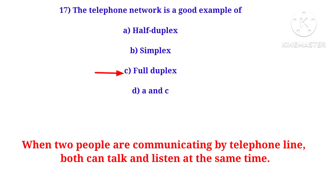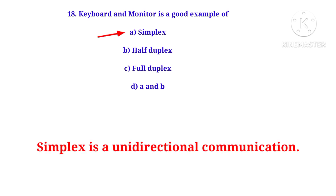The correct answer for the telephone network question is full duplex — when two people communicate via telephone or mobile, it is full duplex. Keyboard and monitor is a good example of simplex, because the signal is transmitted in one direction only — it is unidirectional communication.